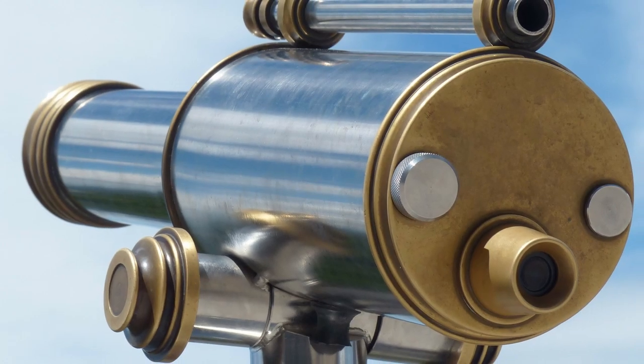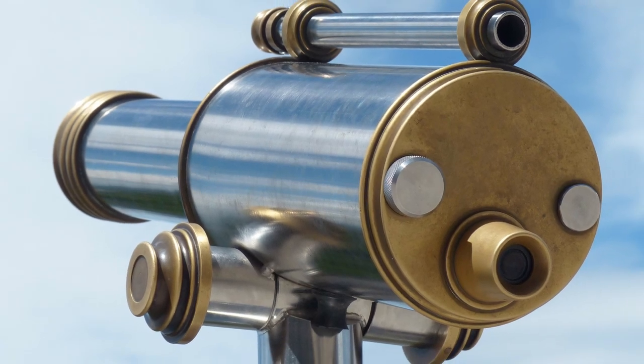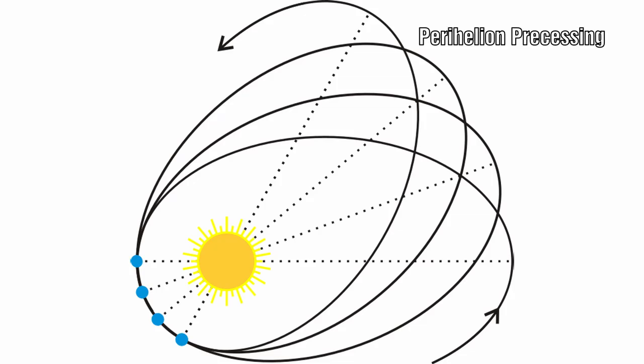As we started to observe planets more closely, it became apparent that the perihelion of Mercury was precessing. Newton's laws could not account for this anomaly. And this is where Einstein's theory of general relativity was able to account for this motion.